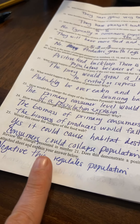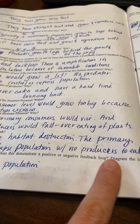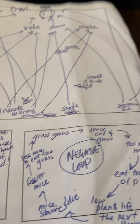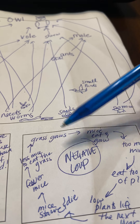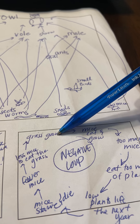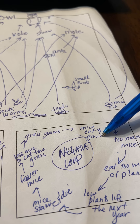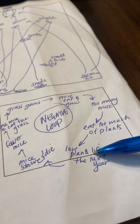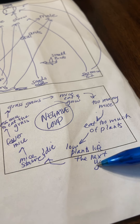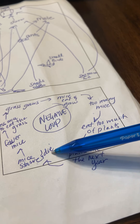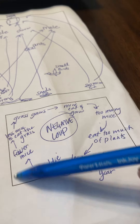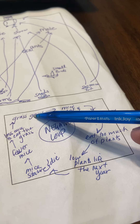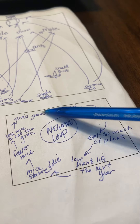Review the change represented in question 21. Does this demonstrate a positive or negative feedback loop? This is a negative feedback loop because it regulates the population. Grass grows, mice eat and reproduce, then there become too many mice and they eat too many of the plants. There's low plant life the next year, so the mice starve and die. Fewer mice means less grazing, and so the grass grows again and bounces back. This regulates the loop — it's a regulatory loop.